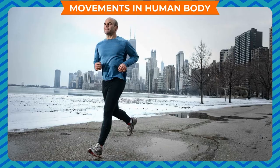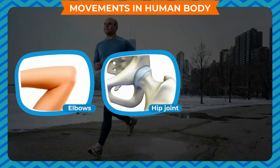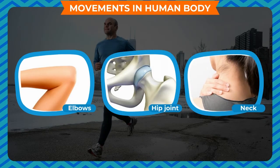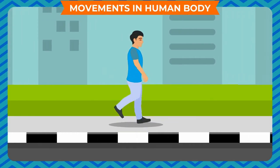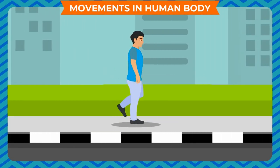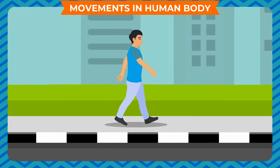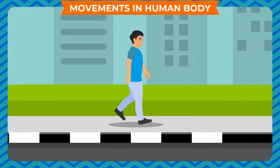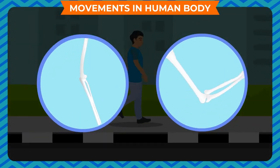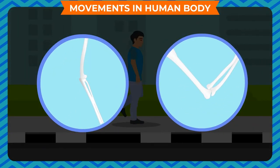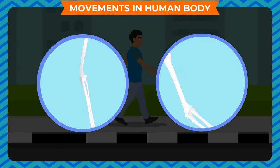Movements in the human body are not possible without the movement of our elbows, hips, neck, etc. We walk from one place to another by using our legs. Some parts of our body can move more than others. The movement is determined by our bones and how they are joined to each other.